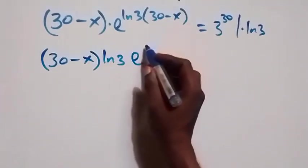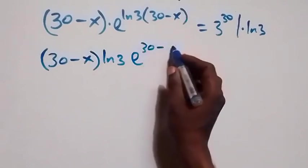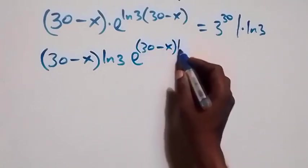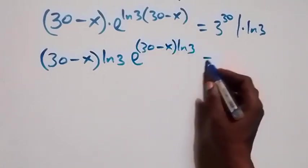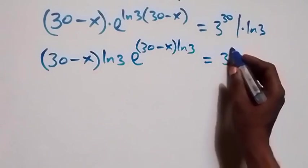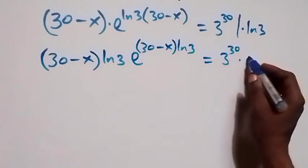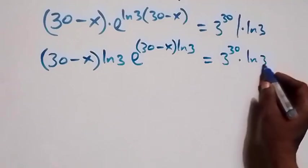We can rearrange this as (30 minus x)·ln 3, which equals 3 raised to power 30 times ln 3.